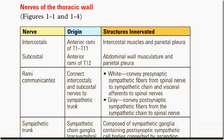Rami communicantes connect the intercostal and subcostal nerves to the sympathetic trunk. White rami communicantes convey presynaptic sympathetic fibers from the spinal nerve to the sympathetic chain and visceral afferents to the spinal nerve. Gray rami communicantes convey postsynaptic sympathetic fibers from the sympathetic chain to the spinal nerve.